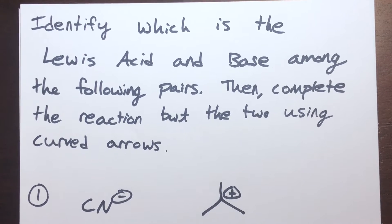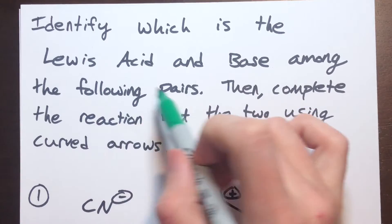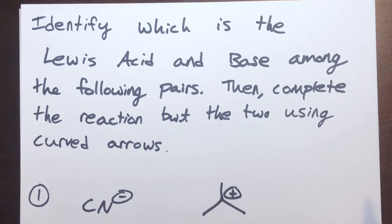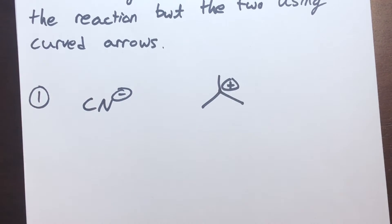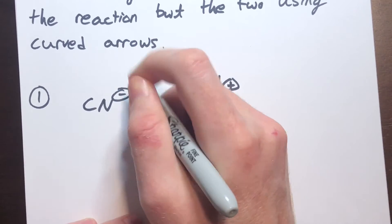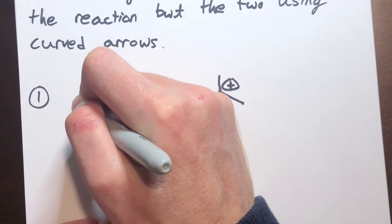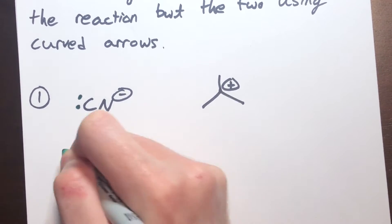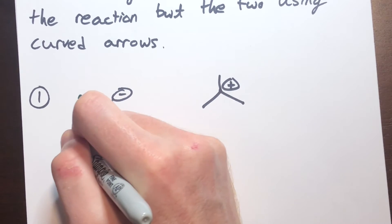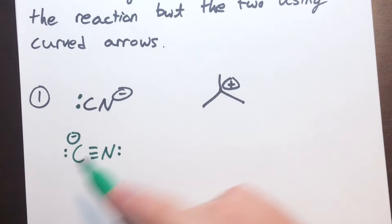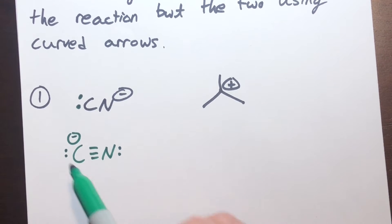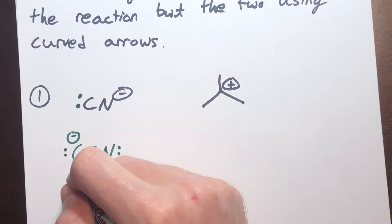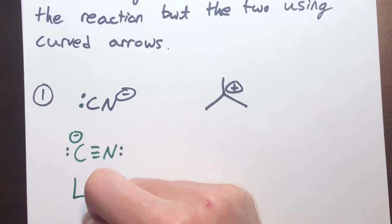We'll work on some specific examples now. The question reads: identify which is the Lewis acid and base amongst the following pairs, then complete the reaction using curved arrows. In the first example, I notice a negative charge, which means there is a lone pair on the carbon. Formal charge counting puts nitrogen with no charge and carbon with a negative charge. They both have a lone pair, but this negative charge is going to drive the reaction — so this lone pair will be involved in the new bond. This is the Lewis base because it has the lone pair available.